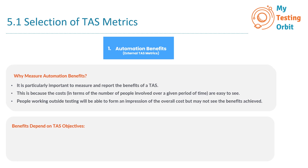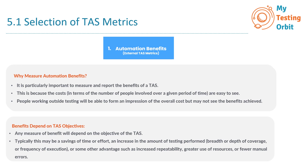Any measure of benefit will depend on the objective of the TAS. Typically this may be a savings of time or effort, an increase in the amount of testing performed, breadth or depth of coverage, frequency of execution, or some other advantage such as increased repeatability, greater use of resources, or fewer manual errors. The rewards you reap from your TAS depend on what you aimed to achieve in the first place — whether that was saving time, enhancing testing coverage, or reducing errors, the benefits align with your original goals.